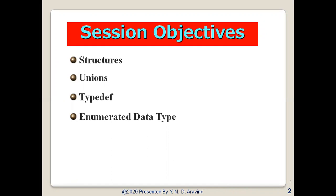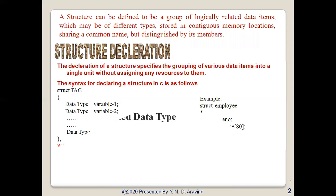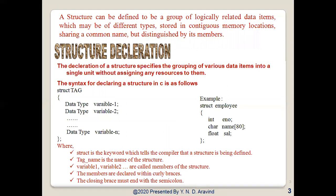Let us know what a structure is. We see that an array enables us to identify a group of similar data items by a common name and thus facilitates easier collective manipulation. In many programming situations, we require to identify a group of data items which may be of dissimilar type by a common name. C supports a user-defined data type known as structure, which is a method for combining data of a dissimilar type. A structure can be defined as a group of logically related data items which may be of different types, stored in continuous memory locations, sharing a common name but distinguished by its members.